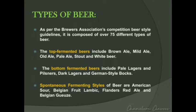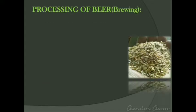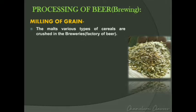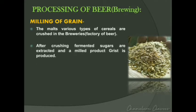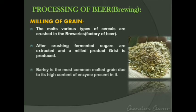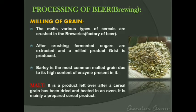Coming to the main topic — the processing or brewing of beer. The first step is milling of the grain, which starts in the breweries or brew house, also known as the factory of beer. In this step, malt of various types of cereals are crushed, fermentable sugars are extracted, and a product called grist is produced. Malt is the prepared cereal product left over after the cereal grain has been dried and heated in the oven.